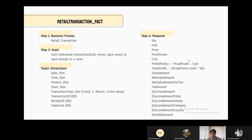In step three, we select date dim, time dim, product dim, store dim, and transaction type dim. Transaction type dim is specified as: one for sale, two for return, and three for giveaway. To identify this transaction type: if the sale amount is equal to zero, we mark it as giveaway; if the quantity is lower than zero, we mark it as return; otherwise, we mark it as sale.